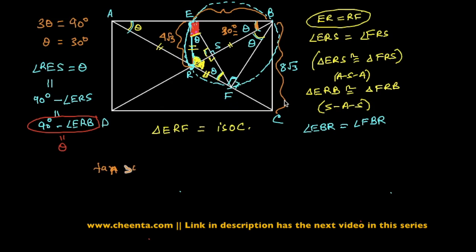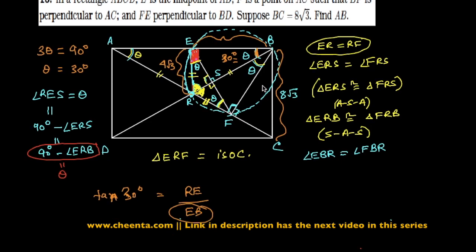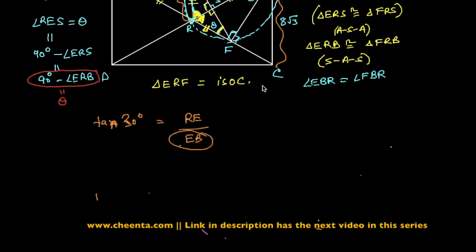Tan of 30 degrees is RE over EB. We are interested to find out EB, because AB is twice of EB. So let's find that out.